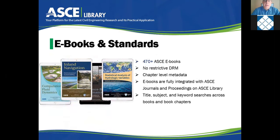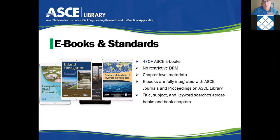We also have a collection of e-books and standards. Now it's almost 500 — when this PowerPoint was made there were 470, but it's almost 500 now. At this time your library doesn't have access to it, but we have a collection that includes about 90 standards titles. The nice thing about the e-books is there's no restrictive DRM — you can download the whole e-book on your own device and it's not going to disappear. It's unlimited simultaneous use, just like our journals and proceedings.